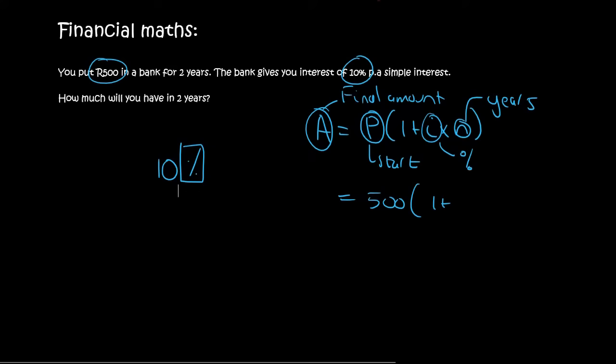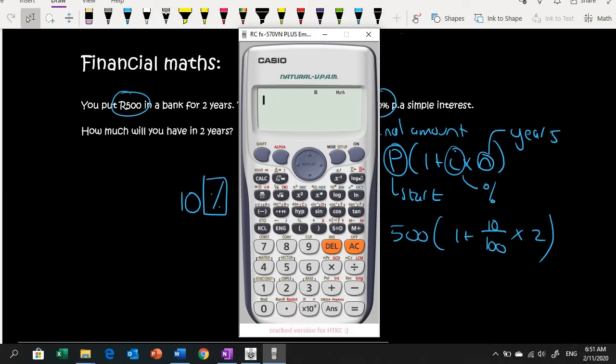That one does have a percentage. You must just look out for it or what a lot of students like to do is they say 10 over 100 and then the number of years is 2 and so you literally just go type all of this in on the calculator like that and I'll quickly show you what it looks like.